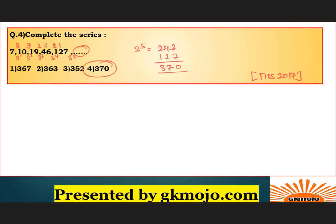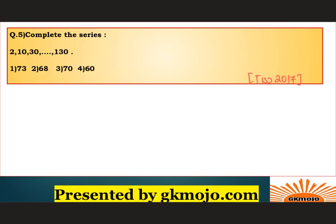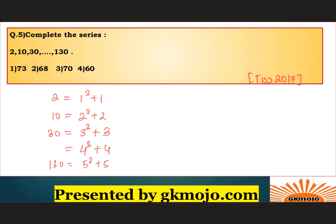Question 5: For this number series, 2 corresponds to 1³ + 1, 10 corresponds to 2³ + 2, 30 corresponds to 3³ + 3 = 27 + 3, and 130 corresponds to 5³ + 5. So the missing term should be 4³ + 4 = 64 + 4 = 68. The correct answer is option 2, which is 68.